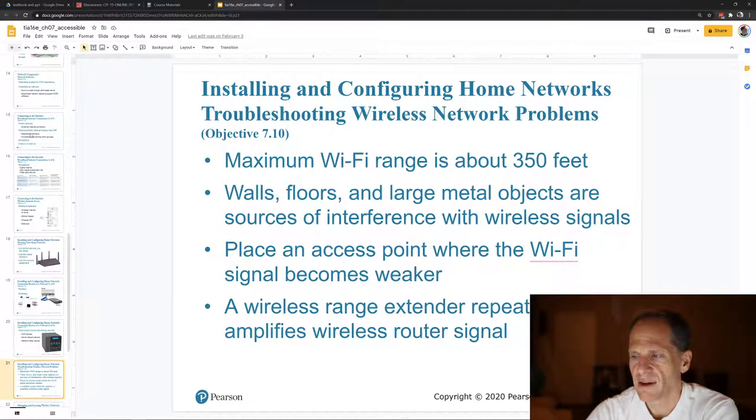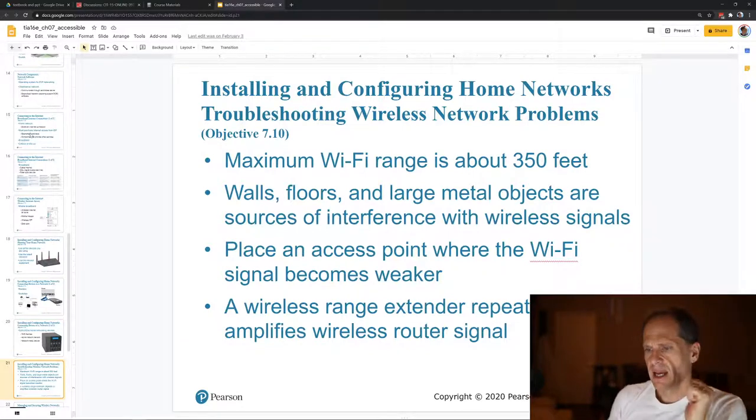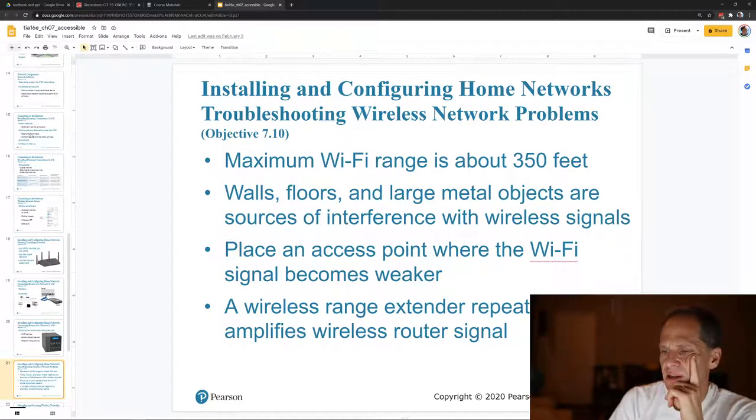And Wi-Fi range max is about 350 feet. Walls, floors, and large metal objects are sources of interference with wireless signals. And you could buy a range extender, which amplifies wireless router signal.